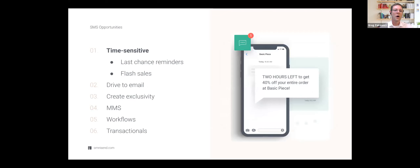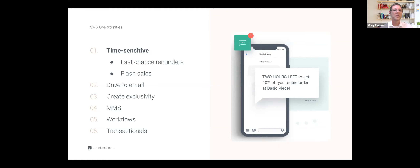SMS is super time-sensitive — 90% of messages are read within the first three minutes, and that number goes up to around 97% within five minutes. Because it's read so quickly, it serves a purpose where emails might not. Think about last-chance reminders when a shopping cart is about to expire, flash sales, or Black Friday/Cyber Monday promotions. You can even send 'two hours left in the sale' messages knowing the consumer will see it immediately.